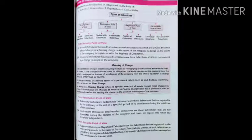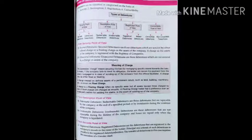Now we study the types of debentures. Debentures can be classified on the basis of security, redemption, registration, and convertibility — generally four categories. From a security point of view, there are two types: secured debentures and unsecured debentures. Secured debentures are those secured by either a fixed charge or a floating charge on the assets of the company, and a charge on the assets is registered with the Registrar of Companies.